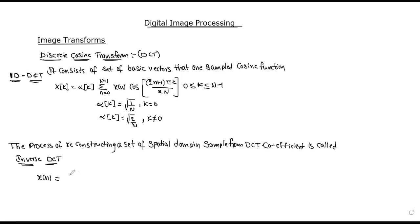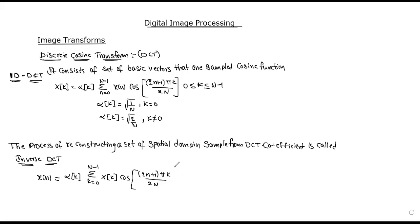x of n is equal to the summation of alpha(k), where k goes from 0 to N minus 1, of X(k) times cosine of (2n plus 1) pi k divided by 2N. Where n lies between 0 and N minus 1. This is the one-dimensional discrete cosine transform and the one-dimensional inverse discrete cosine transform function.